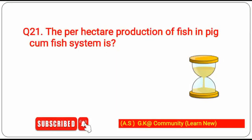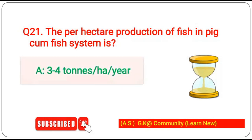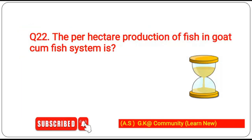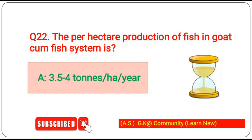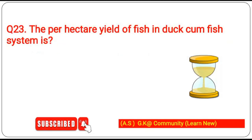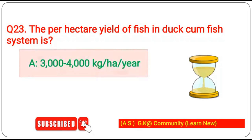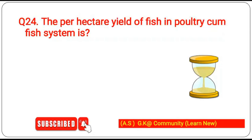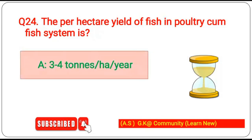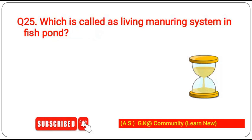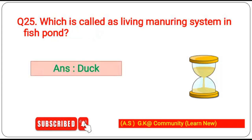Per hectare yield of fish in pig-cum-fish system is 3.5 to 4 tonnes per hectare per year. Per hectare yield of fish in duck-cum-fish system is 3000 to 4000 kg per hectare per year. Per hectare yield of fish in poultry-cum-fish system is 3 to 4 tonnes per hectare per year. Which system is called the living manuring system in fish pond? The answer is duck.